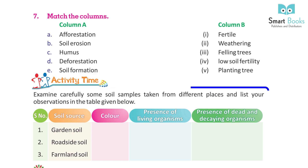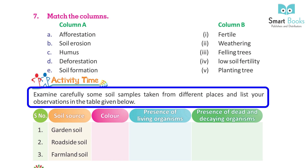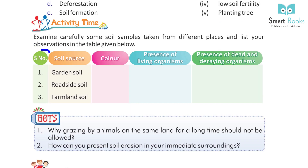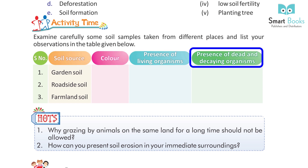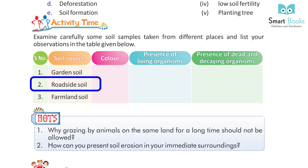Activity time: Examine carefully some soil samples taken from different places and list your observations in the table given below. Columns include: Serial number, Soil source, Colour, Presence of living organisms, Presence of dead and decaying organisms. Soil sources include: 1. Garden soil, 2. Roadside soil, 3. Farmland soil.